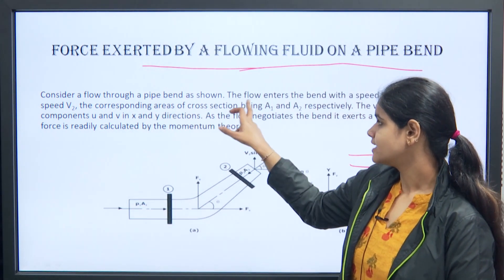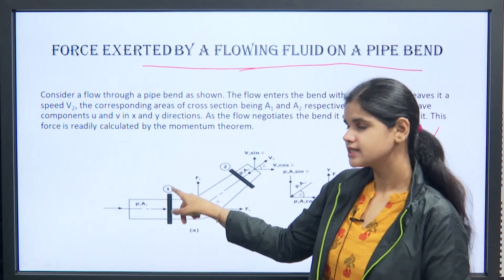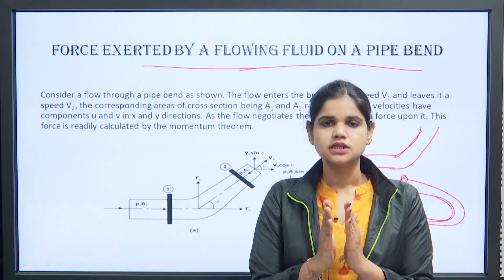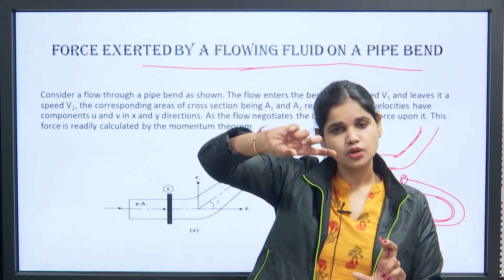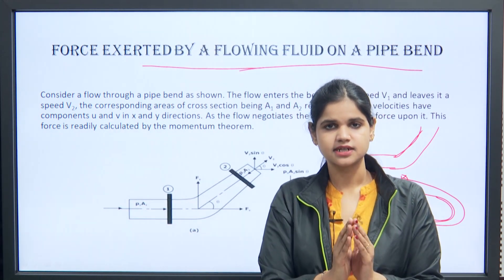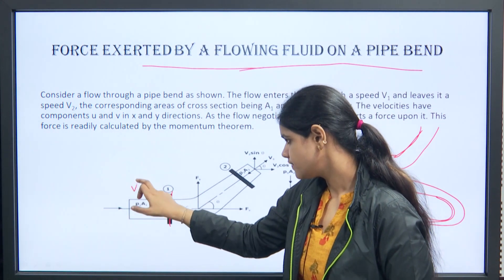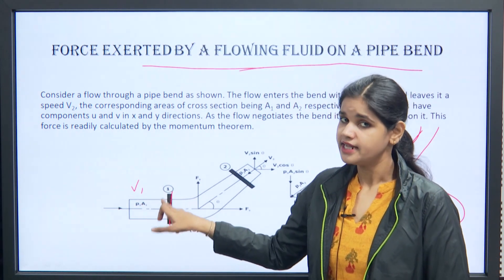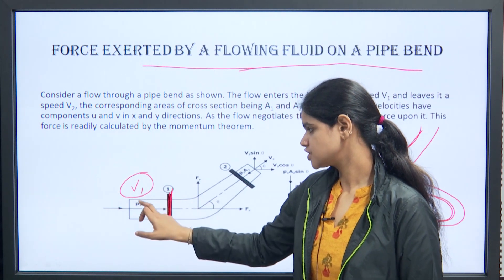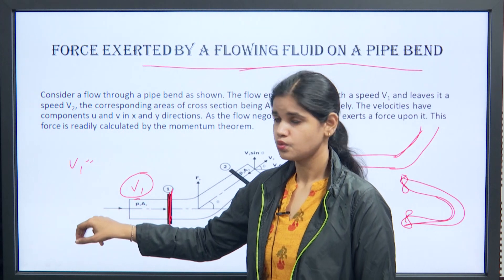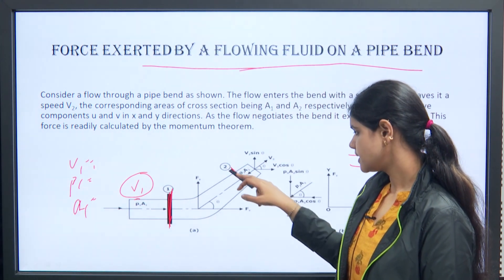Consider flow through a pipe bend as shown in the figure. The flow enters the bend with speed V1 and leaves with velocity V2. Section 1 is on the horizontal side (unbent), and section 2 is on the bent side. We need to check which forces are acting at both sections.